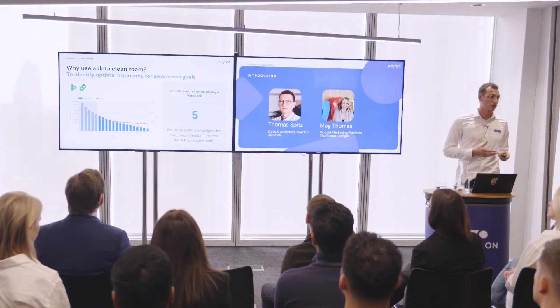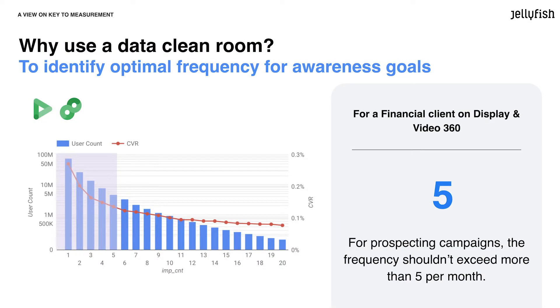Another example for a client on DV360: we used the granularity of the platform to identify the best capping and the best reach-on-frequency in order to optimize the acquisition strategy. Here, the best frequency was five, and it helped us ensure that we were not saturating the audience.